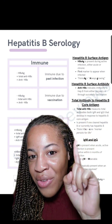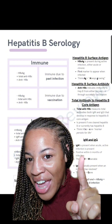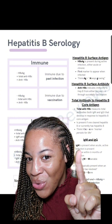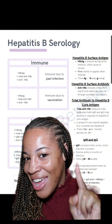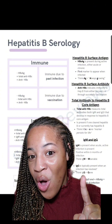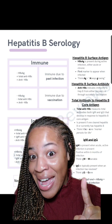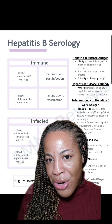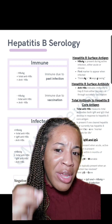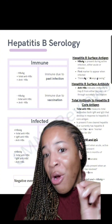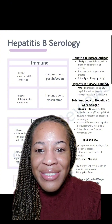Then you've got IgM for miserable — acute infection — and IgG for gone, meaning past infection. It even walks through the patterns such as immunity from vaccination or immunity from infection.